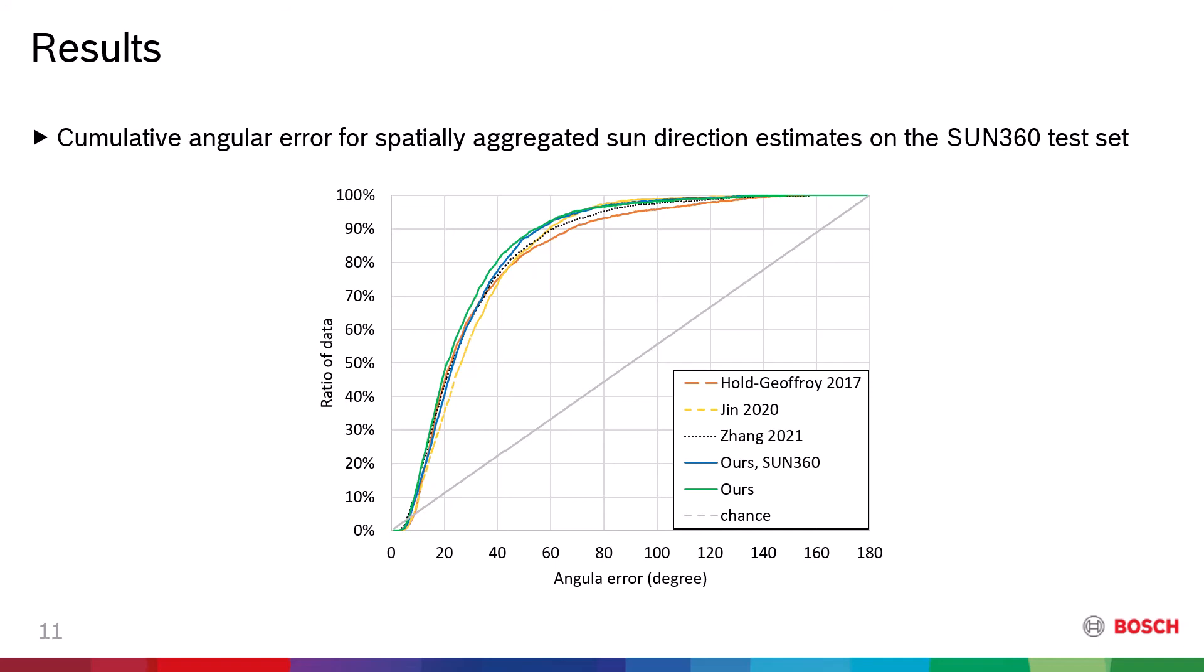This graph illustrates the cumulative angular error of the predicted sun directions. Since the previous methods were trained with only the Sun360 training set, we also present our method's performance when it was trained only on Sun360. Here, you can see that our method performs better than the previous techniques, even with the same training set.